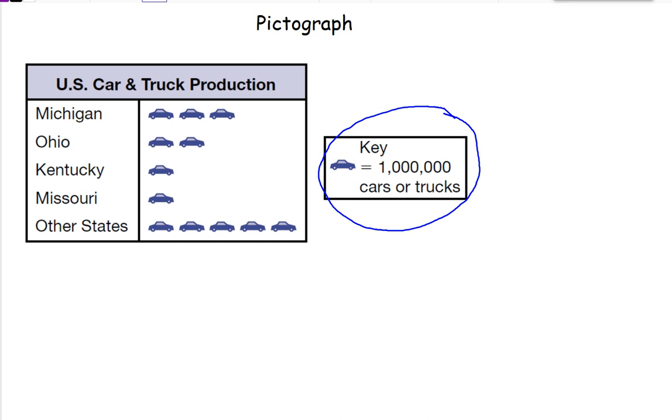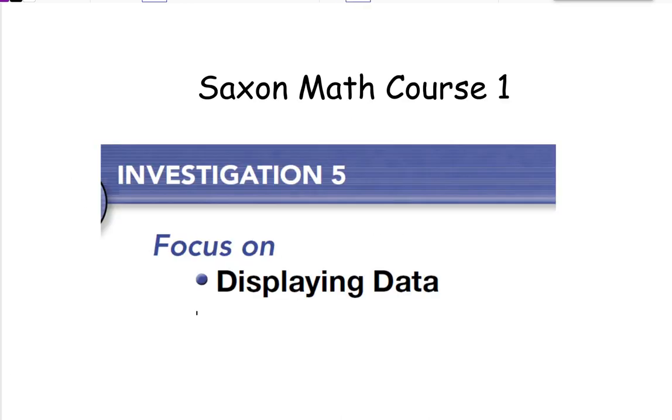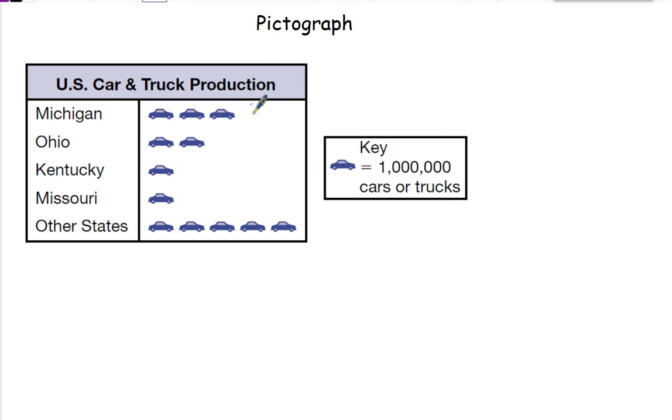So that means Michigan here has three million, Ohio has two, Kentucky one, Missouri one, and all the other states have five. Now it helps sometimes to turn these into fractions. I need to first figure out how many cars and trucks are made total. We have three plus two is five, six, seven, plus five is twelve. So there are twelve million cars produced each year.